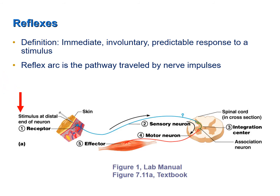A receptor detects the stimulus. A sensory neuron then sends sensory input from the receptor toward the third component, which is the integration center — typically the spinal cord in the case of a spinal reflex, or the brain in the case of a cranial reflex. After integration, a motor neuron sends motor output out to the last component of a reflex arc, which is the effector.